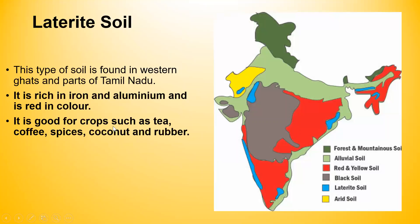Laterite soil is found in the Western Ghats and parts of Tamil Nadu. It is rich in iron and aluminium and is red in color. It is good for crops such as tea, coffee, spices, coconut and rubber.